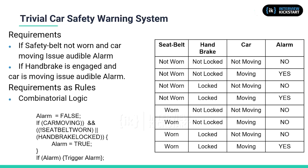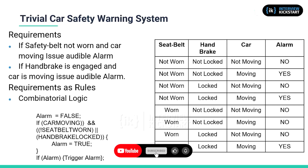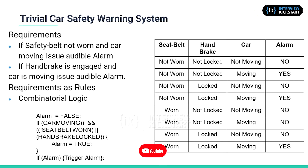A better approach would be to do a Kmap reduction, but Kmap reduction is possible only for binary values. In reality, parameter values may not be binary. Yet another approach is to look for patterns in the input-output relation.